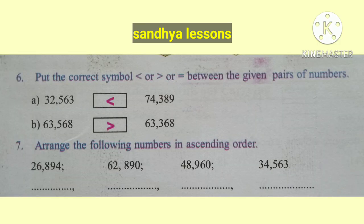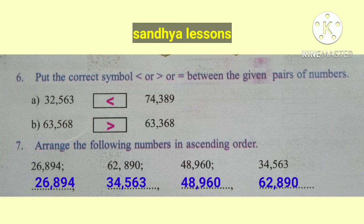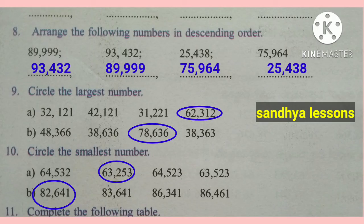Sixth question: put the correct symbol between the given pairs of numbers. 32,563 is less than 74,389. 63,568 is greater than 63,368. Seventh question: arrange in ascending order (small to big) — 26,894; 34,563; 48,960; 62,890. Eighth question: arrange in descending order — 93,432; 89,999; 75,964; 25,438.